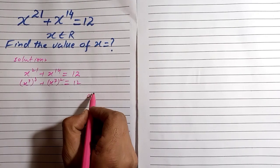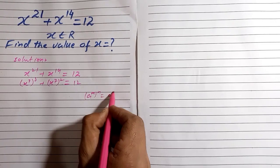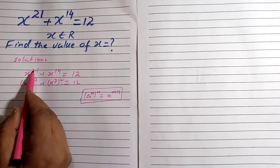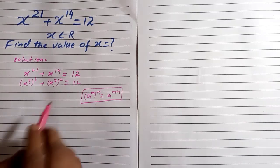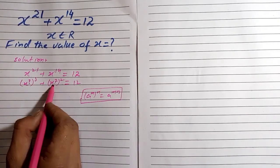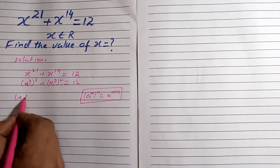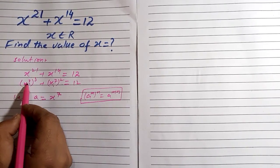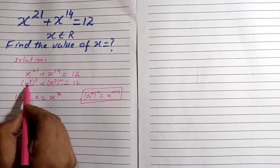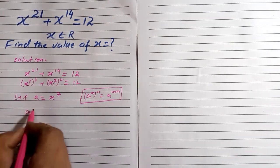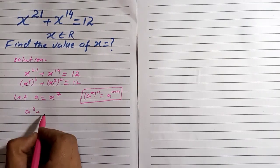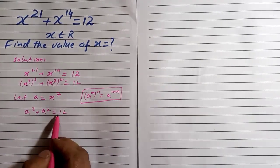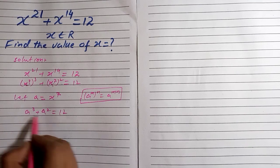For this we are using the exponential power rule: a^(mn) = a^m^n. These two terms are similar using this power rule. So we let a = x^7, and we can write this as a^3 plus a^2 which is equal to 12.